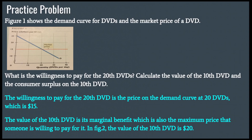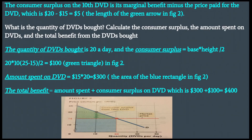The value of the 10th DVD is its marginal benefit, which is also the maximum price that someone is willing to pay for it. In Figure 2, the value of the 10th DVD is $20. The consumer surplus on the 10th DVD is its marginal benefit minus the price paid: $20 minus $15 equals $5, which is the length of the green arrow in Figure 2.